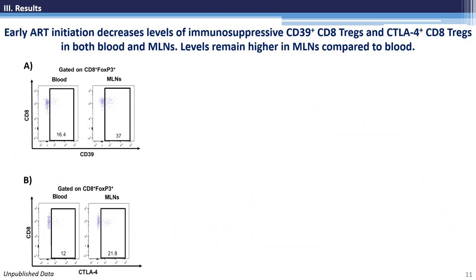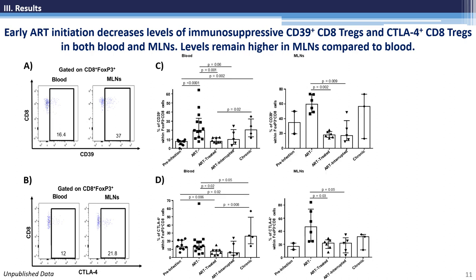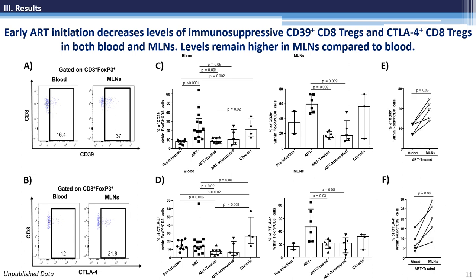We finally evaluated the effect of early ART initiation on two immunosuppressive subpopulations of CD8 T-regs: CD39-positive and CTLA-4-positive CD8 T-regs. CD39, in coordination with CD73, converts the inflammatory ATP into anti-inflammatory adenosine, and the expression of CD39 by CD8 T-regs has been linked to disease progression. Furthermore, CTLA-4 restricts the activation of effector T cells. We observed an increase in both CD39-positive and CTLA-4-positive CD8 T-reg frequency during acute SIV infection, which were normalized by early ART initiation in both mesenteric lymph nodes and blood. We then compared available matched blood and mesenteric lymph node specimens of early ART-treated animals, and observed systematically higher frequencies of these populations in mesenteric lymph nodes compared to blood, suggesting differential dynamics that could potentially contribute to increased immunosuppressive function within the mesenteric lymph nodes.